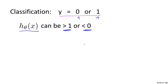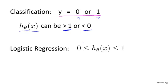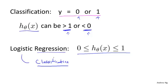So, what we'll do in the next few videos is develop an algorithm called logistic regression, which has the property that the output, the predictions of logistic regression, are always between 0 and 1 and doesn't become bigger than 1 or become less than 0. And by the way, logistic regression is, and we will use it as a classification algorithm. It's maybe sometimes confusing that the term regression appears in this name, even though logistic regression is actually a classification algorithm. But that's just the name it was given for historical reasons. Logistic regression is actually a classification algorithm that we apply to settings where the label y is discrete valued, when it's either 0 or 1.